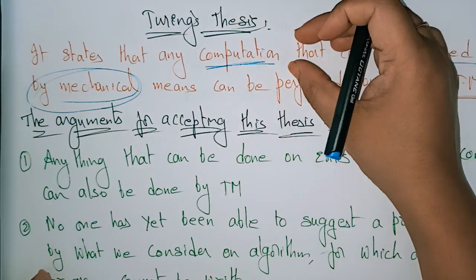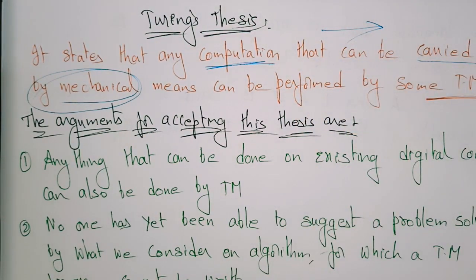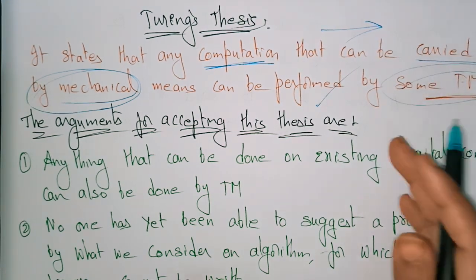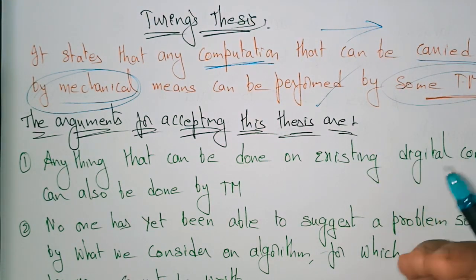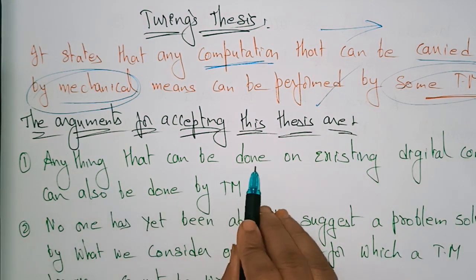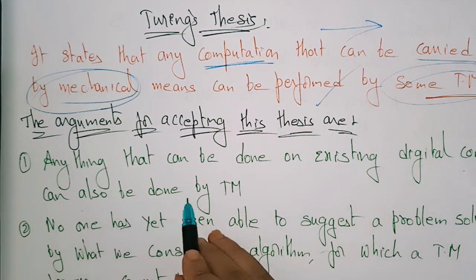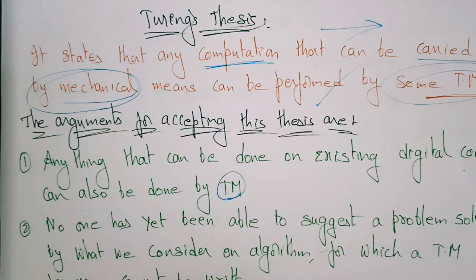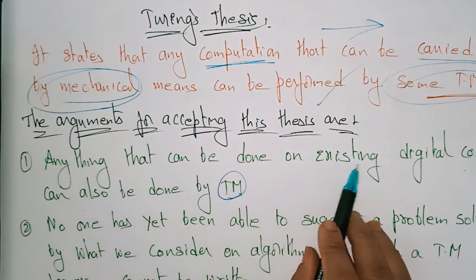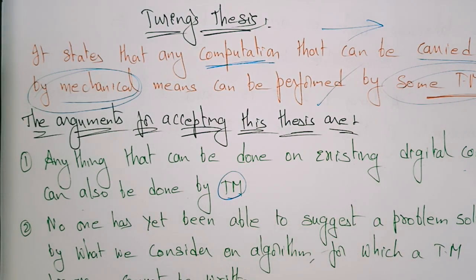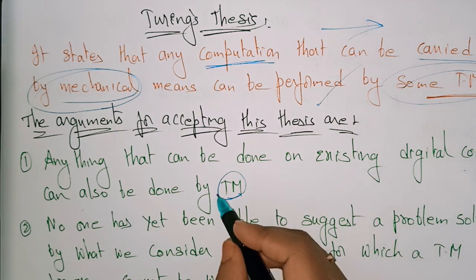The arguments for accepting this thesis: the first argument is that anything that can be done on an existing digital computer can also be done on a Turing machine. So whatever work you are doing on a digital computer can also be done in the Turing machine.